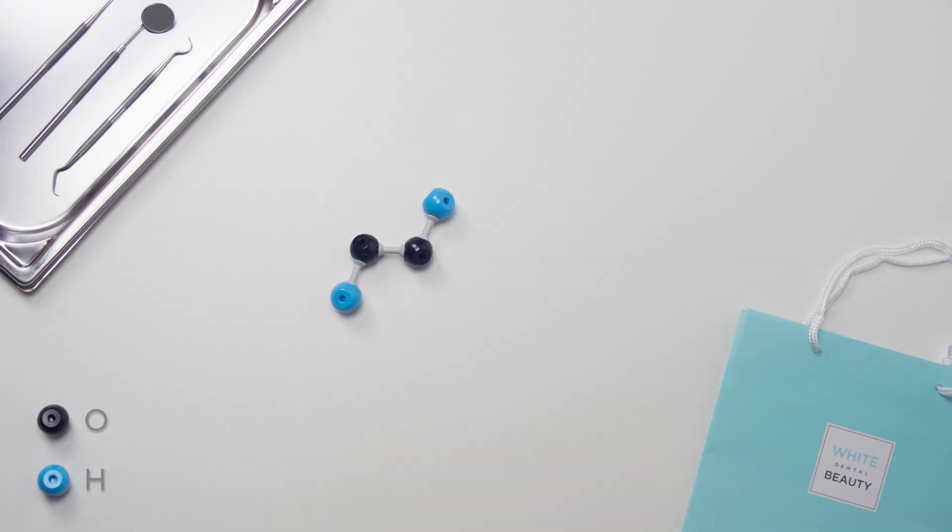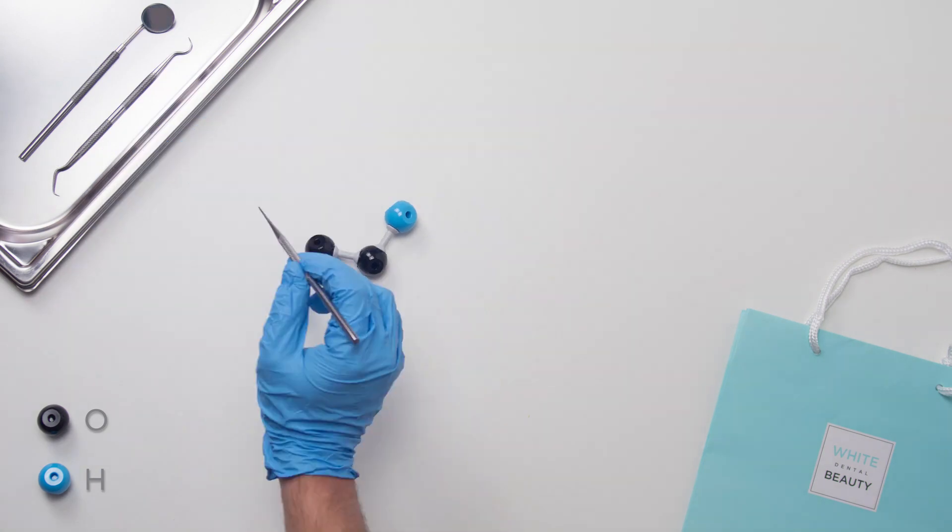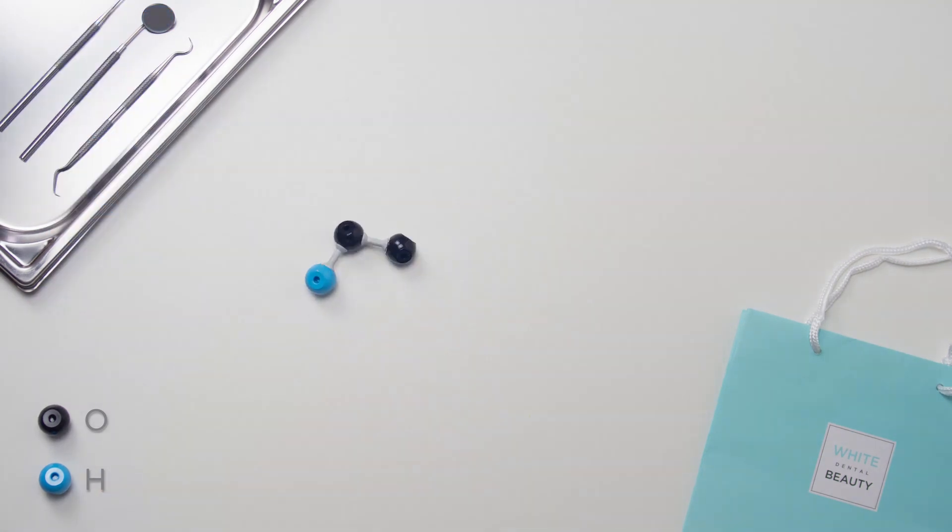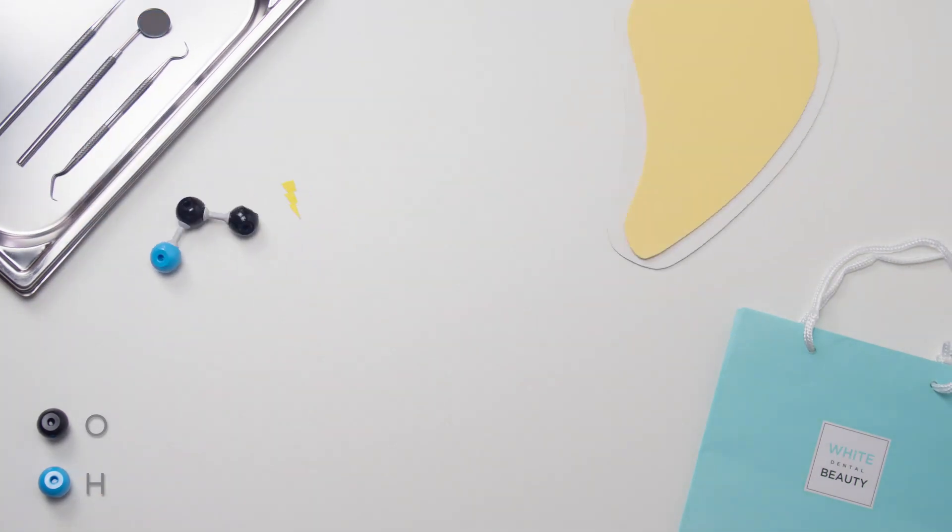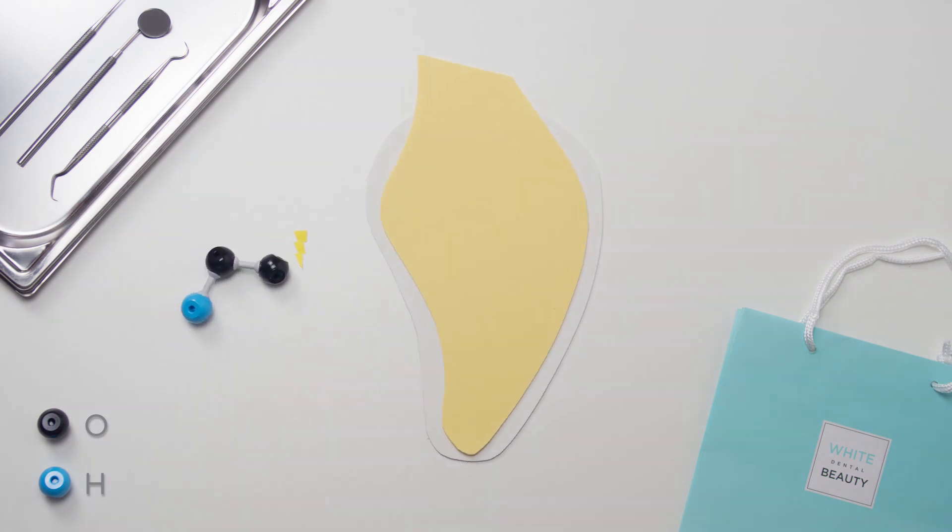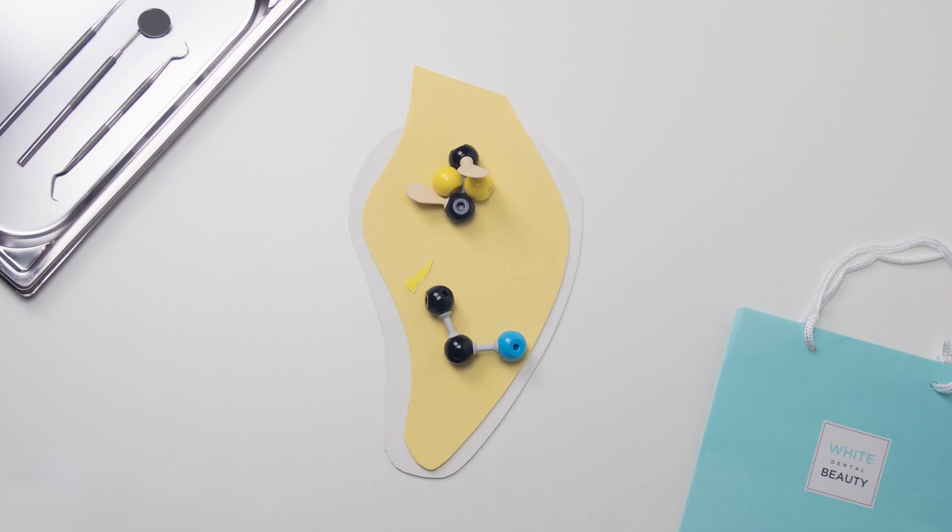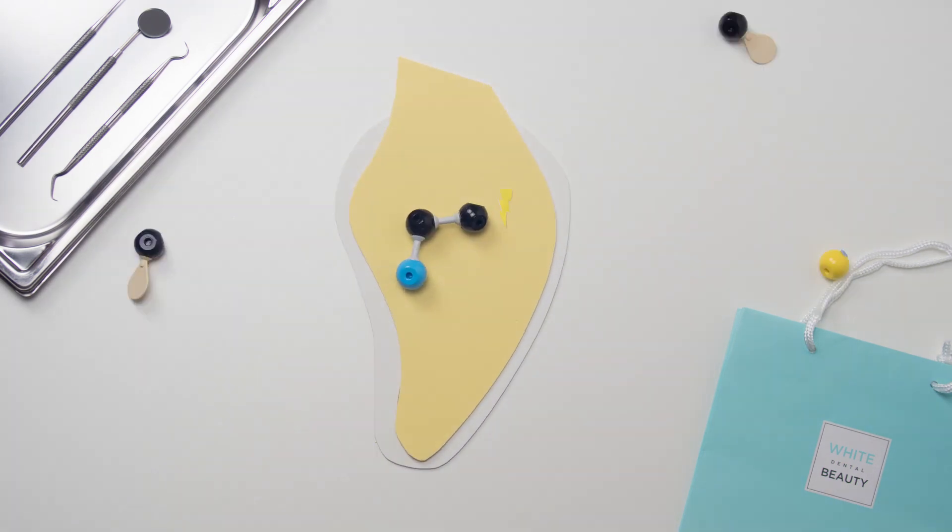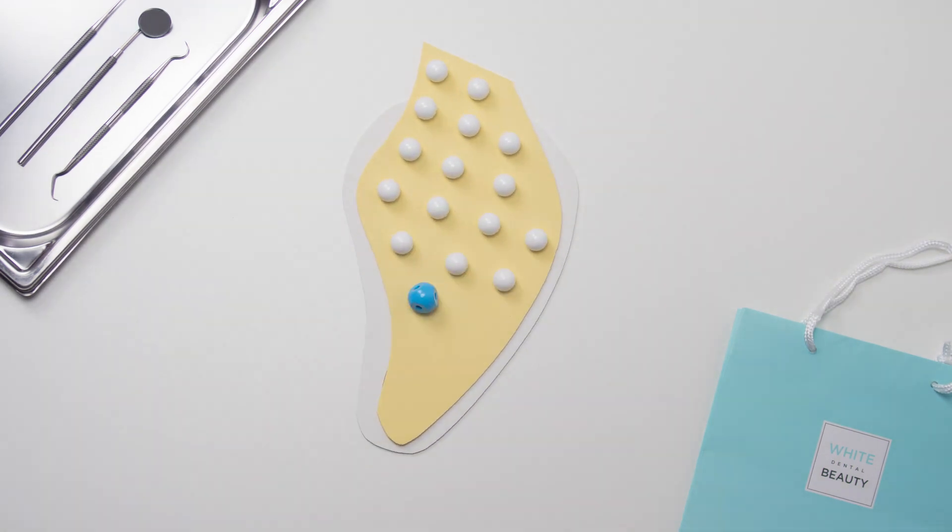All tooth whitening gels work in four simple steps. Firstly, hydrogen peroxide breaks down into a perhydroxyl ion and a hydrogen ion. The perhydroxyl ion then passes through the enamel into the dentine before breaking down the large organic molecules which cause tooth staining, and this results in whiter teeth.